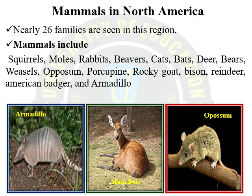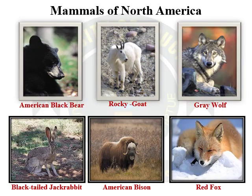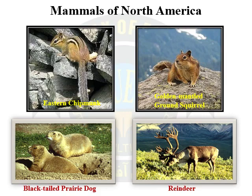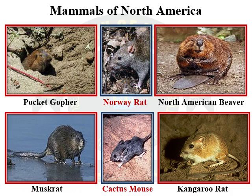The mammalian fauna of the North American region is represented by 26 families. Common mammals include squirrels, moles, rabbits, beavers, cats, bats, deer, bears, weasels, opossum, porcupine, Rocky Mountain goat, bison, reindeer, American badger, and armadillo. Here you can see some of the beautiful mammals of North America, including American black bear, red fox, eastern chipmunk, golden-mantled ground squirrel, black-tailed prairie dog, reindeer, pocket gopher, Norway rat, North American beaver, muskrat, cactus mouse, and kangaroo rat.